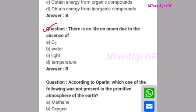Next question: There is no life on the Moon due to the absence of what? This is an important question. The correct answer is option B: water. Due to the lack of water, there is no life on the Moon.